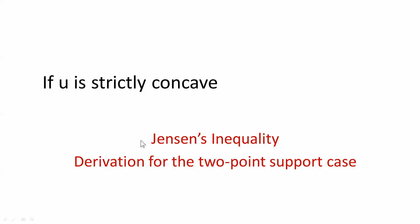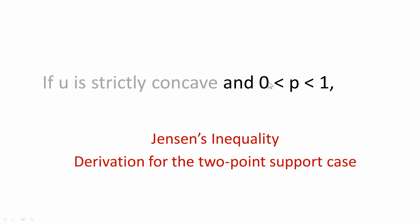This presentation is going to do the math of expected utility to talk about risk aversion. The math we're going to rely on is something called Jensen's inequality. We're going to derive that result in the case of a two-point support — the random outcome can either be a low value or a high value. U is our utility function, and we're going to assume it is strictly concave and increasing. P is the probability of the low value, strictly between zero and one, meaning we really do have randomness.